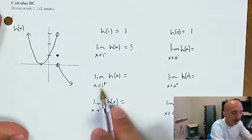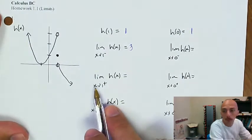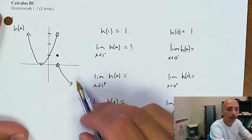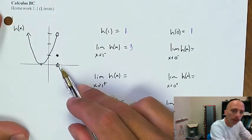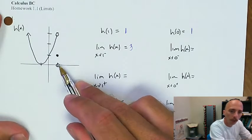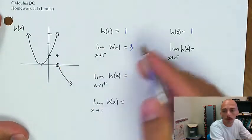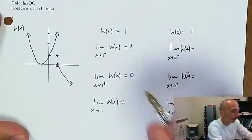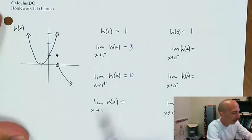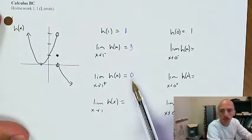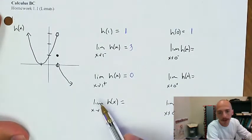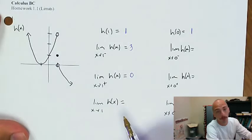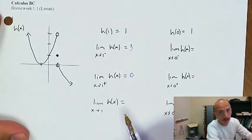In the same way, they ask about the limit as x approaches 1 from the positive side. From the right, from the positive side, we're getting closer and closer to y equals 0, so the limit of h is 0. Because these two one-sided limits don't agree, the limit as x approaches 1 of h of x fails to exist because of disagreement in one-sided limits.